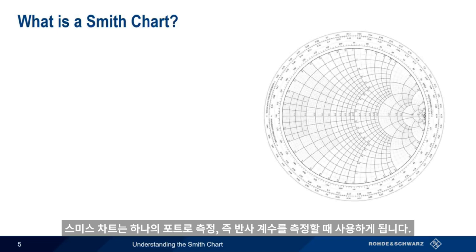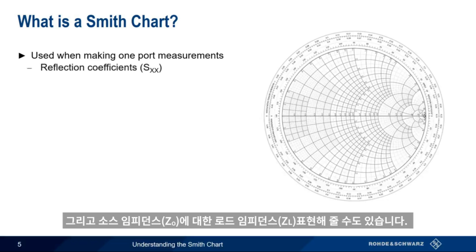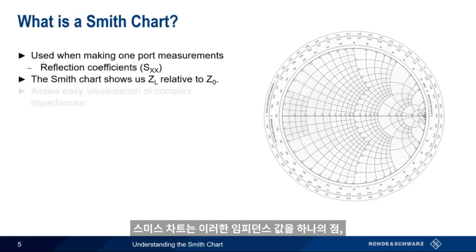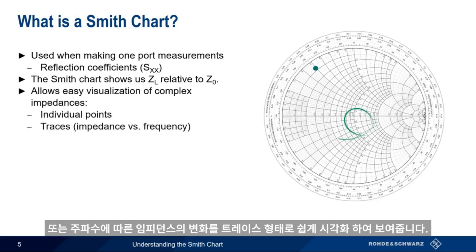The Smith Chart is used when making one-port measurements, that is, when measuring the reflection coefficients. Another way of saying this is that the Smith Chart shows us the load impedance, Z sub L, relative to the source impedance, Z sub 0. A Smith Chart makes it easy to visualize these complex impedance values, either as a single point, or as a line that represents impedance as a function of frequency.